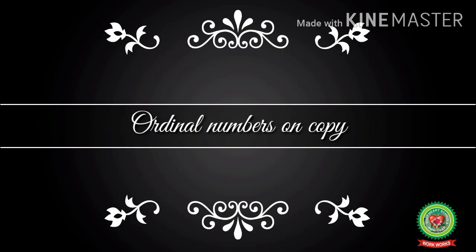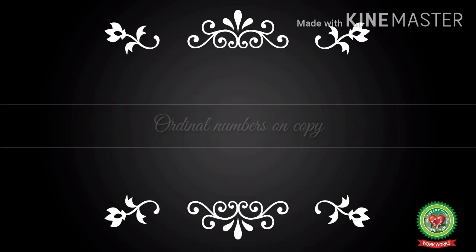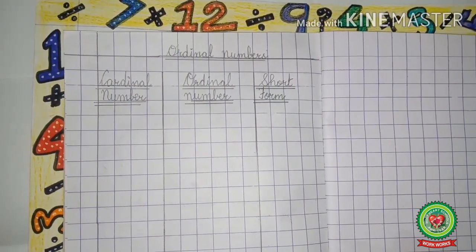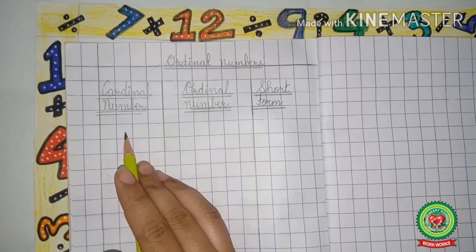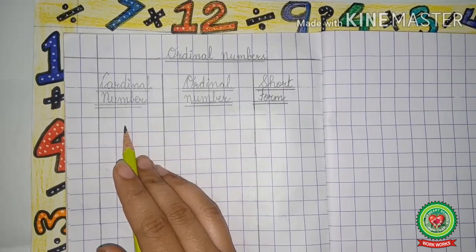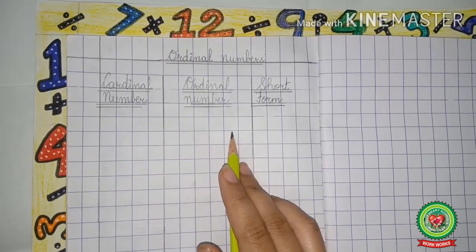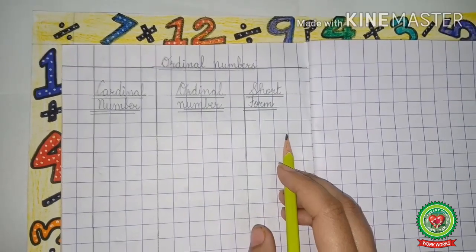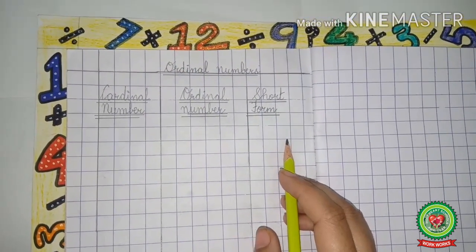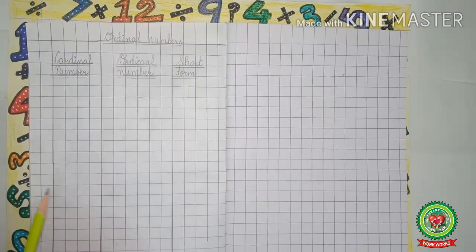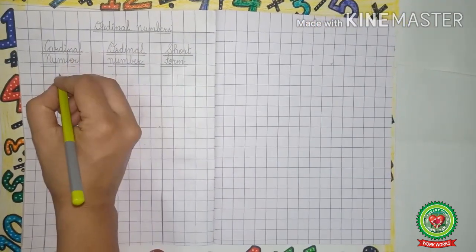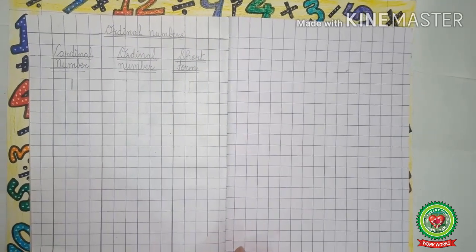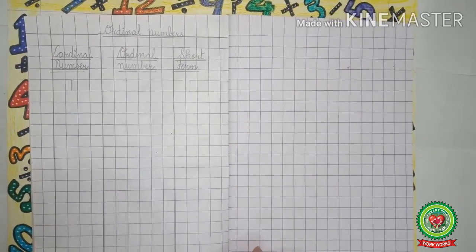Now let us practice ordinal numbers on copy. I have divided this page into three parts. In the first part we will write the cardinal numbers, in the second part we will write the ordinal number, and in the third part we will write the short form of an ordinal number. The cardinal number is one and the ordinal number of one is first.